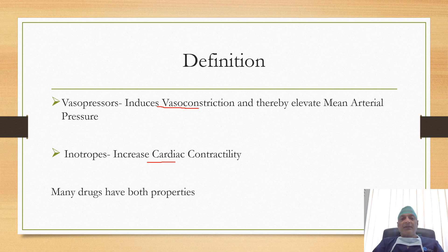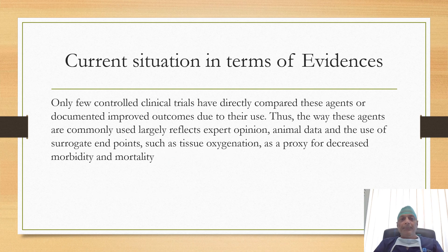Many drugs have properties of both inotropes and vasopressors. Only few controlled clinical trials have directly compared these agents or documented improved outcome due to their use. Thus, the way these agents are commonly used largely reflects expert opinion, animal data, and the use of surrogate endpoints such as tissue oxygenation as a proxy for decreased morbidity and mortality.